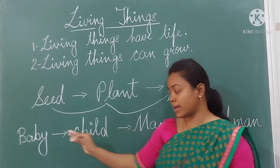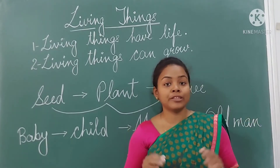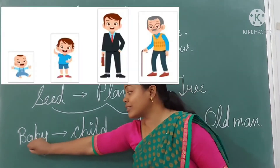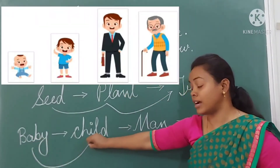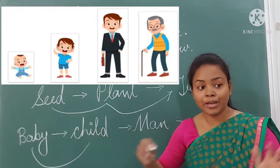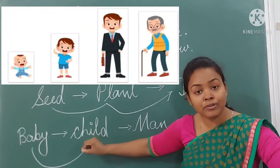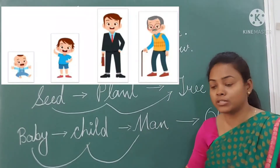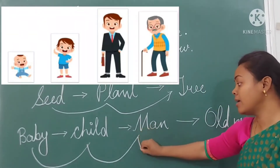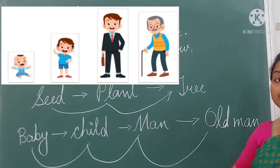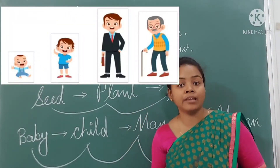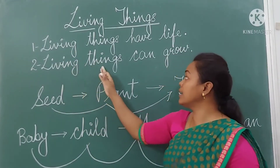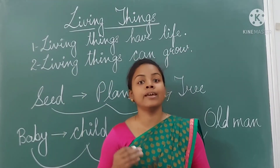Let's take another example of a baby. When you were little, how did you grow? A baby turns into a child, then you grow into a man or woman, and when men and women grow older, they change into an old man or old woman. So, the second characteristic is: living things can grow.